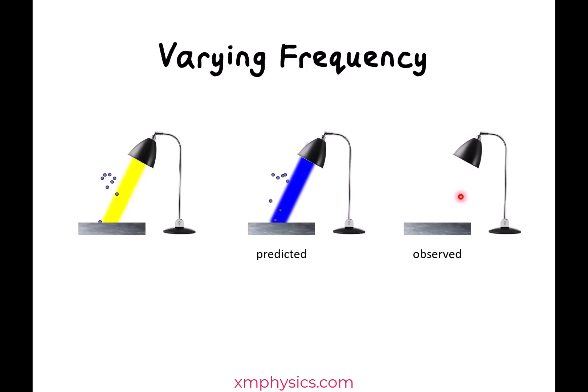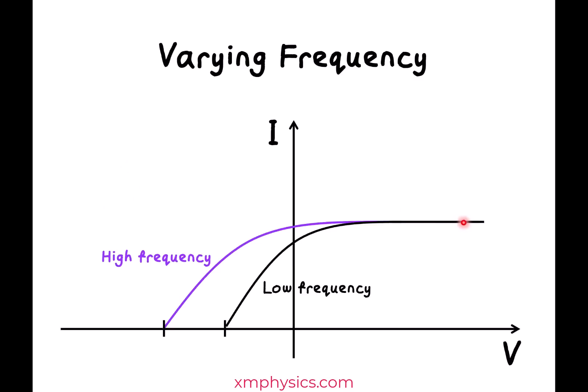So what were the actual observations? If you increase the frequency of the light, you actually get photoelectrons being liberated at a higher KE. So on the IV graphs, it means that if this is the original one, if you increase the frequency, if you shorten the wavelength of the light beam, you actually get a higher stopping potential, which tells us that photoelectrons are now being emitted with a higher KE max.